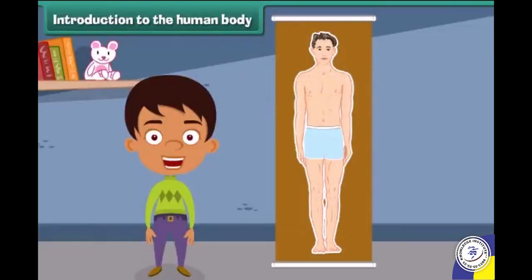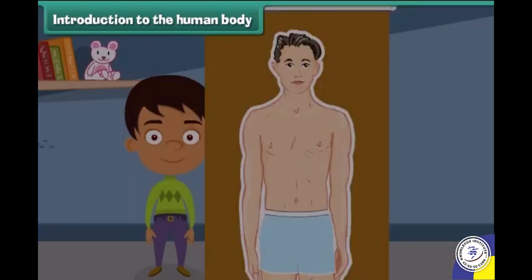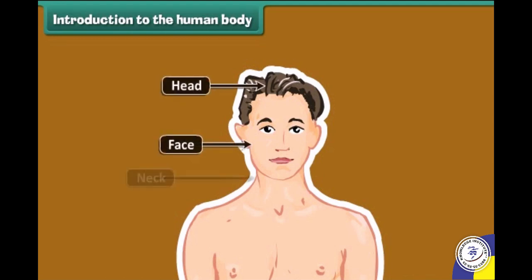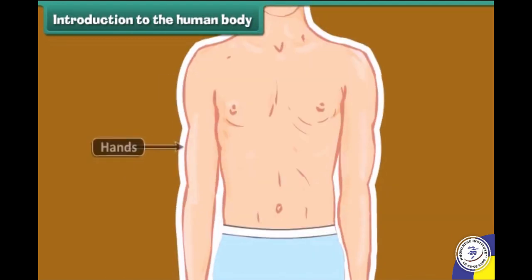Hello all, can anybody tell me the names of various parts of our body? The main parts of our body are: head, face, neck, hands, stomach and legs.